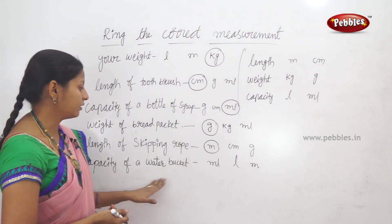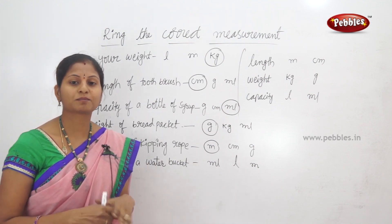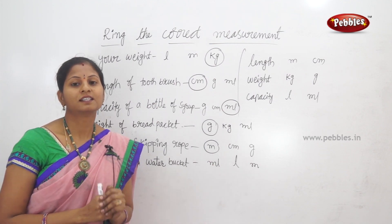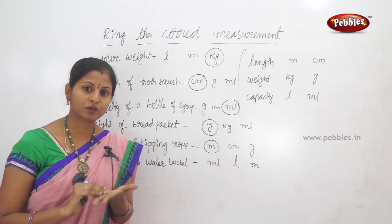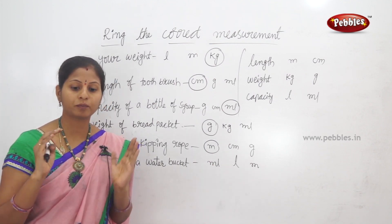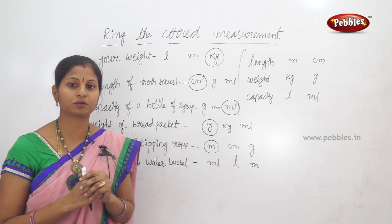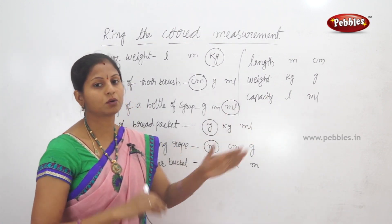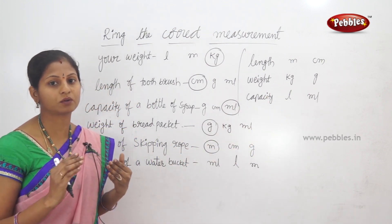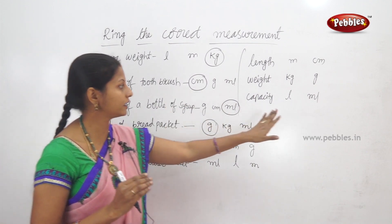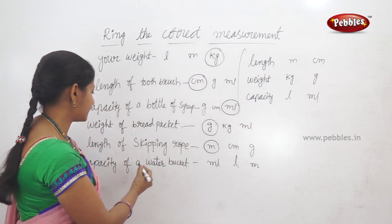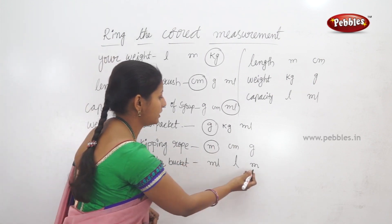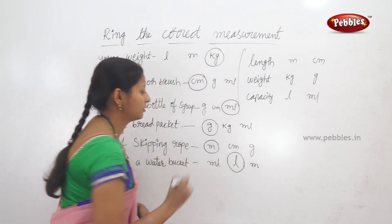Next example: capacity of a water bucket. We fill the bucket with full water. The water quantity is large — equal to the heavy quantity. Capacity is liters and milliliters. So a bucket of water has heavy quantity, which is liters. Capacity of a water bucket is measured in liters.